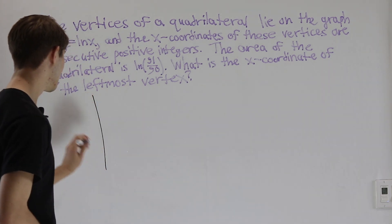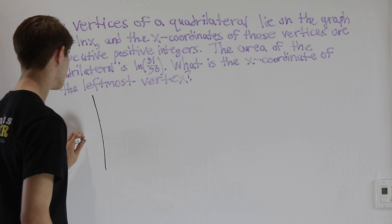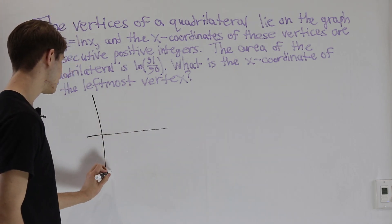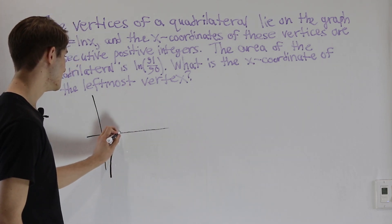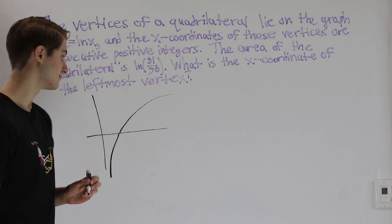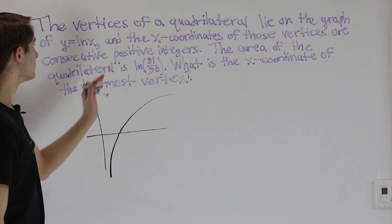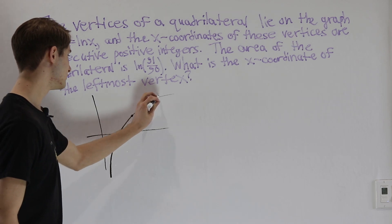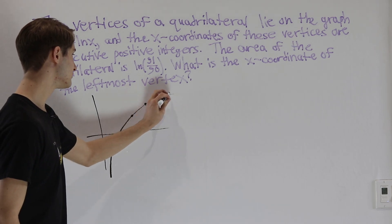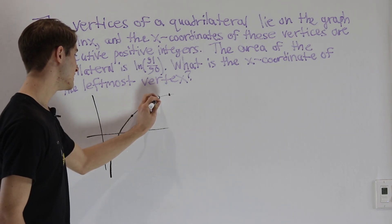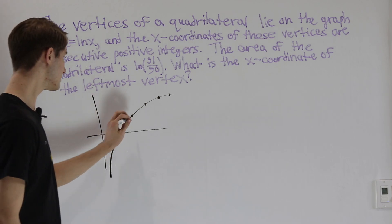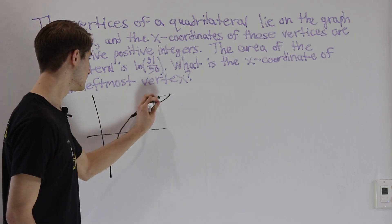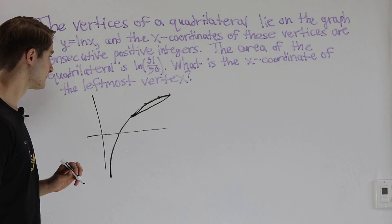To start out, let's take a look at the graph we're working with. We know we have the natural log of x, which starts down at negative infinity, goes up to zero, and then increases from there. We're going to pick four consecutive positive integers on this graph and construct a quadrilateral out of those four points.